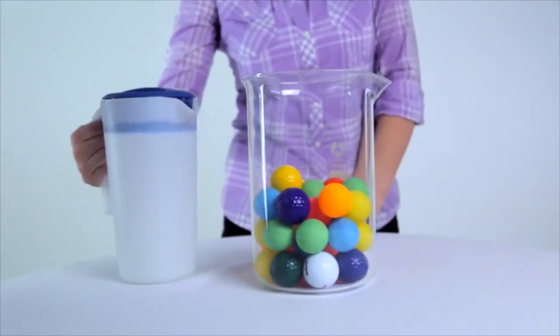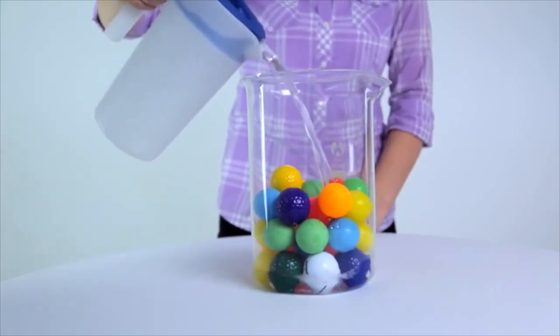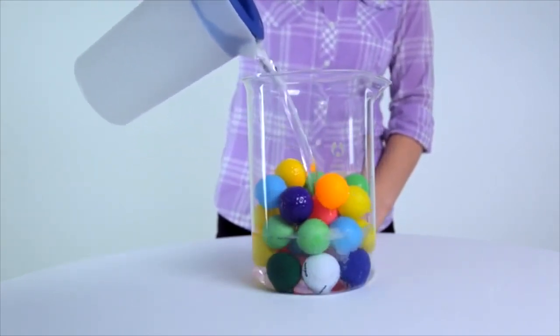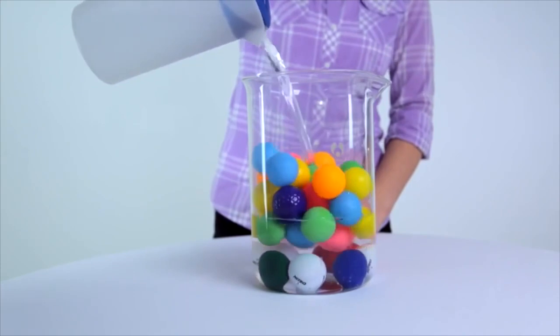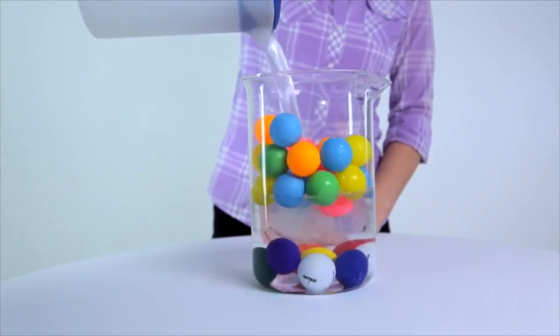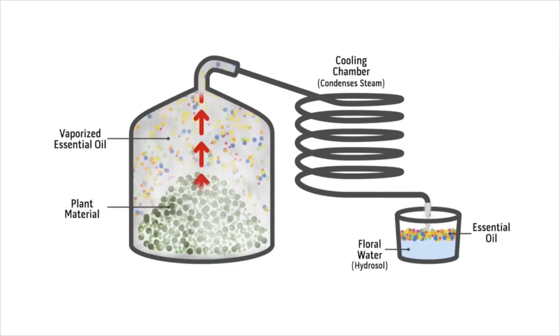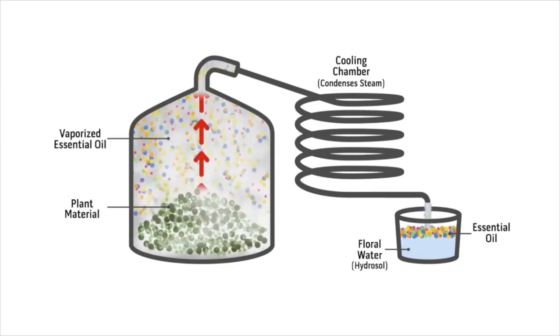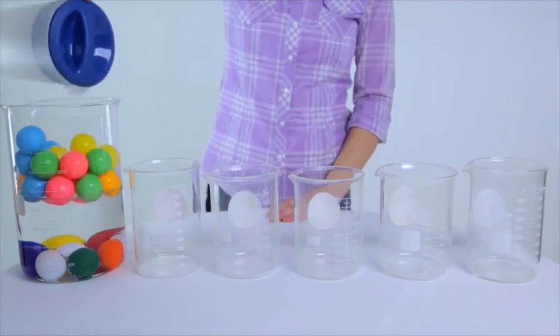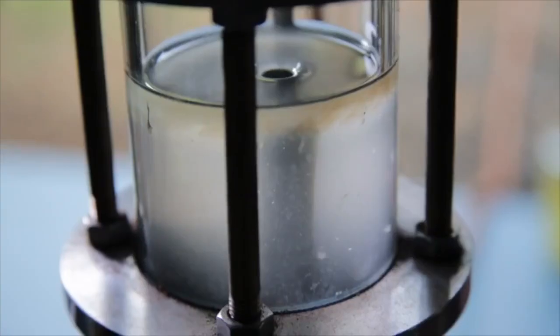Now water is poured into the beaker representing the process of steam distillation. Only certain balls rise to the surface, just as only volatile aromatic compounds are collected during steam distillation. The floating balls represent the pure essential oil yield.